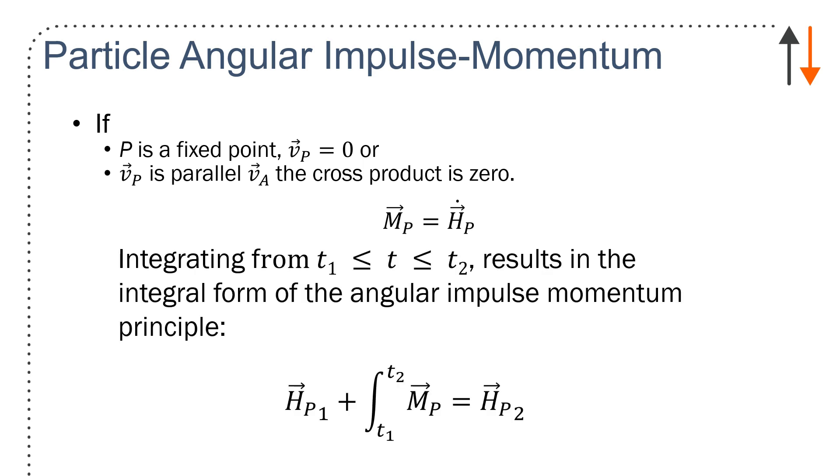If you integrate it, which is a standard thing to do, you have the angular impulse momentum principle. h_p1 plus the integral from t1 to t2 of m_p dt equals to h_p2. So out of this, you have something that looks a lot like that linear impulse momentum expression, but now you're using moments.